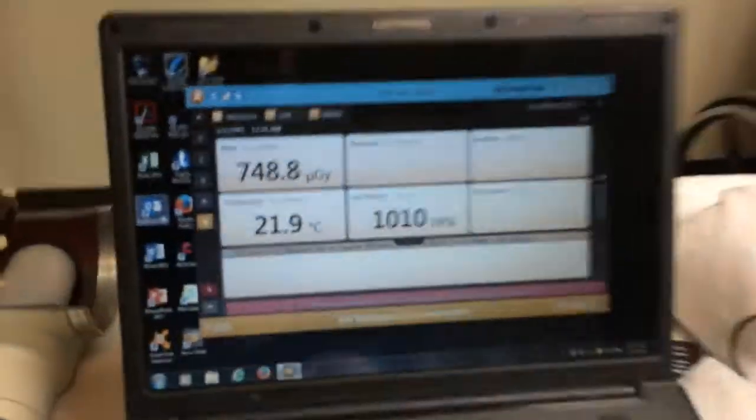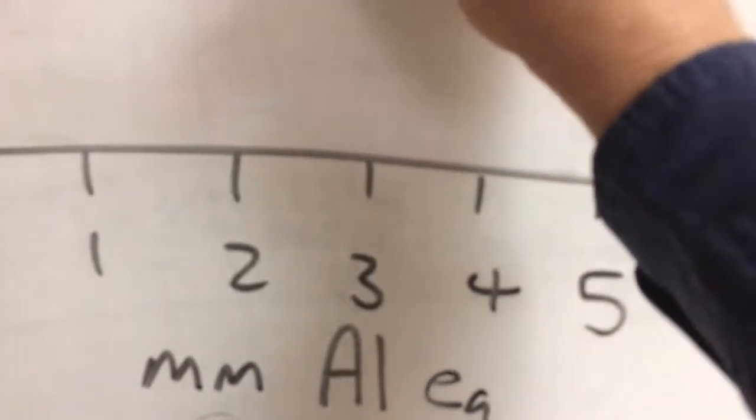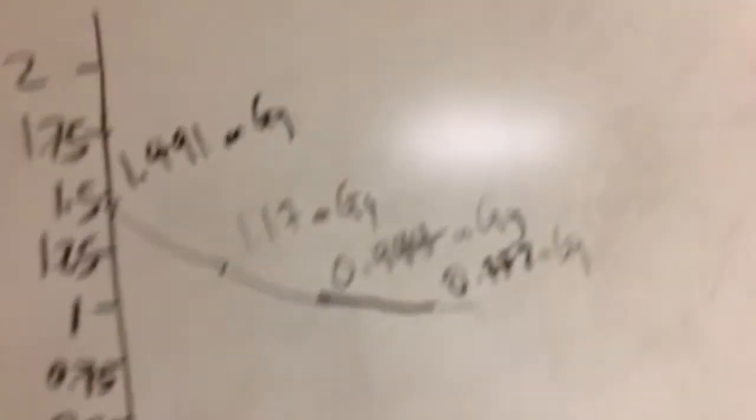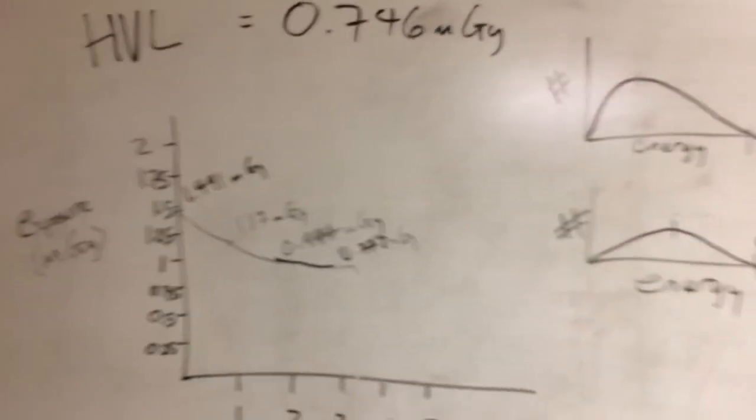Let's see what we got on our ionization chamber. We got 0.748, 0.749, somewhere in there. So we have just arrived at our half-value layer. For this machine, it's about 3.2 millimeters of aluminum. That did put us right at the amount of exposure that we would associate with a half-value layer operating at this energy level.